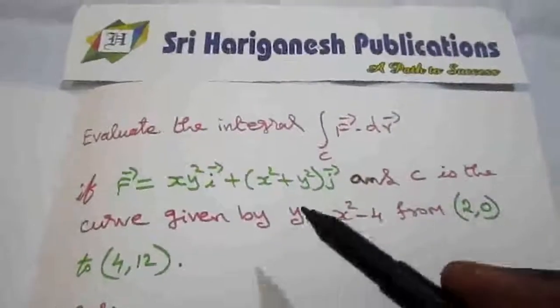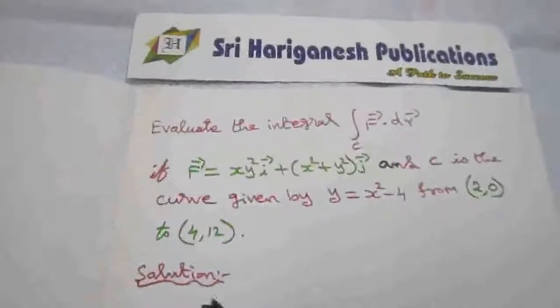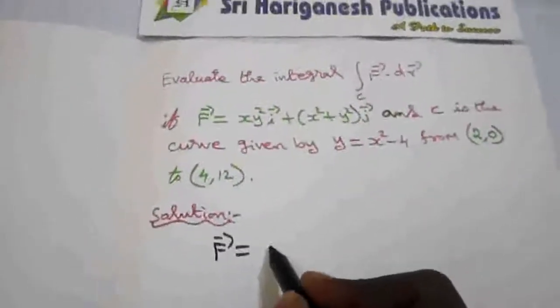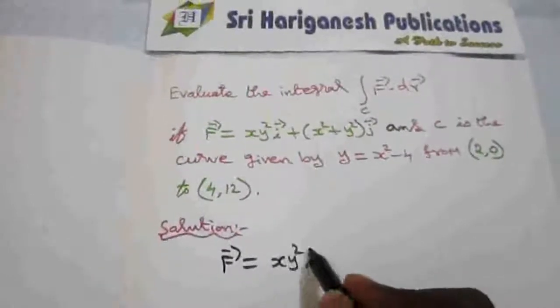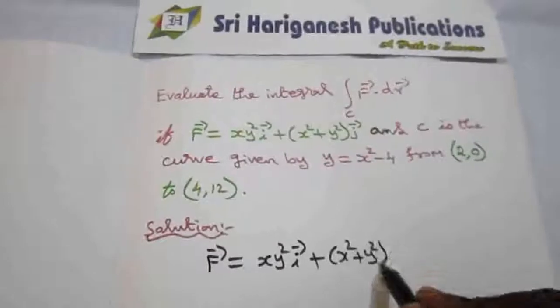The given f vector is xy² i vector plus (x² + y²) j vector.